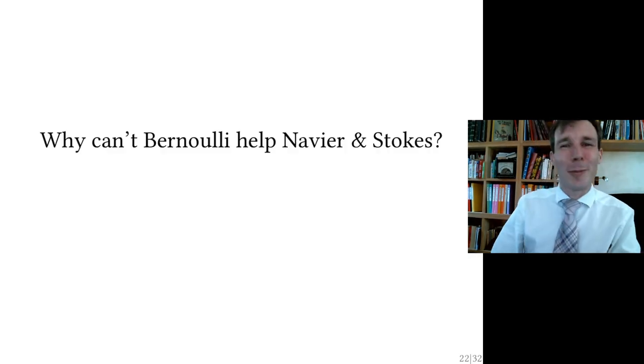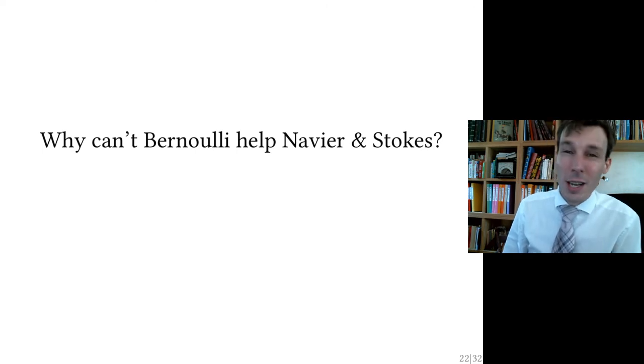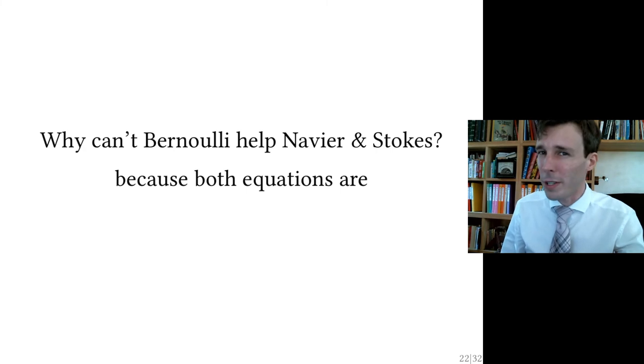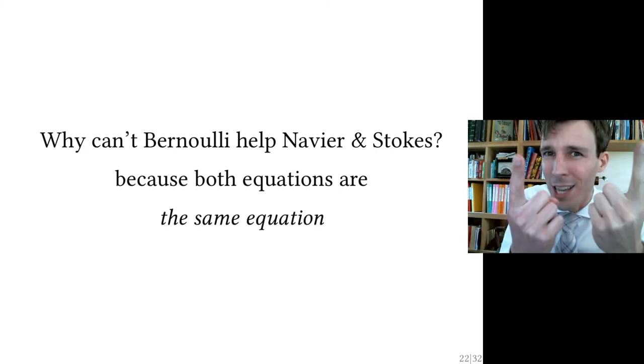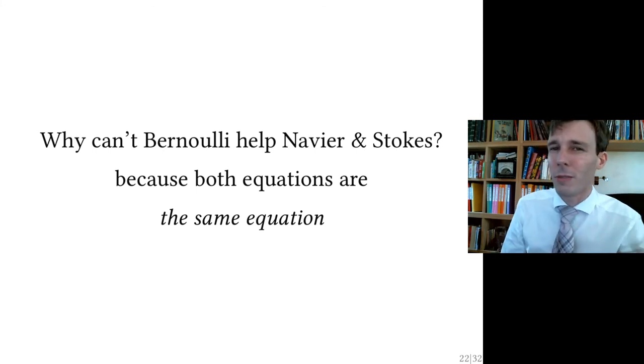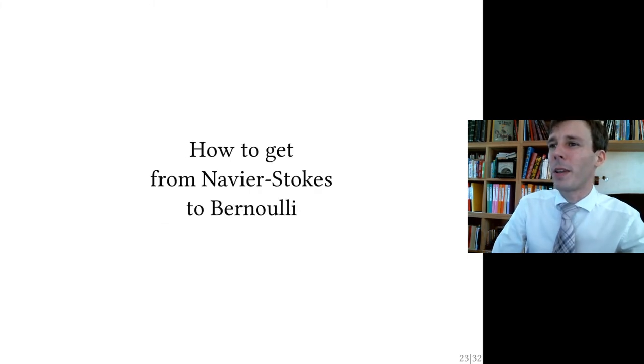And so we are left with a problem that Bernoulli just will not chill out. Bernoulli wants to help Navier-Stokes, but Bernoulli can't help Navier-Stokes. And why? Because both equations, the Navier-Stokes equation and the Bernoulli equation, they are the same equation. And so to show us and understand what the relationship between the two are, we need to go through how to get from Navier-Stokes to Bernoulli.